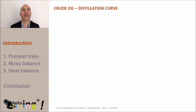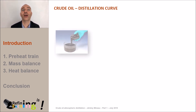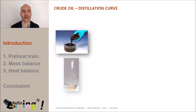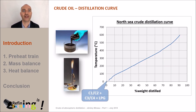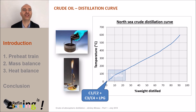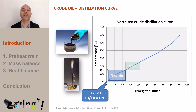Before entering into the process itself, let's do an experiment together. If you take a small amount of oil and you heat it up, we will start by vaporizing the lighter molecules — that is to say the C1, C2 and C3, C4, also called LPG. Finally, at a temperature of about 30 degrees C, the naphtha will be vaporized up to 150 degrees C.